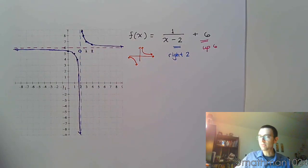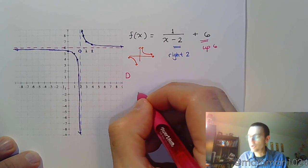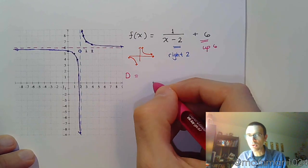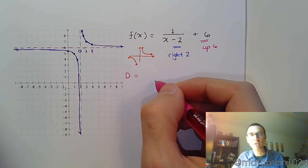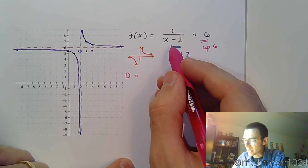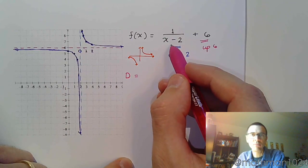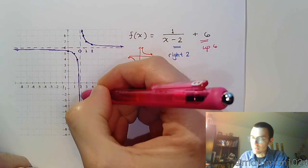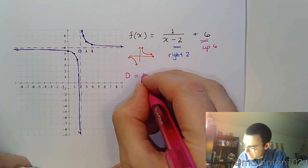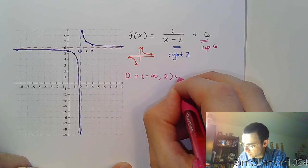Now let's answer the questions from our last example. The domain should be all real numbers except for the value that makes the denominator 0. I see x minus 2 in the denominator — what makes that 0? x equals 2. That matches the vertical asymptote, so the domain is all real numbers except 2.